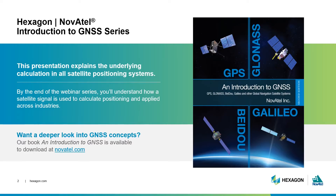This is the first of seven presentations designed to introduce you to GNSS Basics. This presentation will explain the underlying math that happens when using satellites to determine your position in the world. The webinar series will explore what happens to the signal as it leaves the satellite and goes through the atmosphere to your equipment and across industry. The series builds off our existing expertise — literally writing the book on GNSS. If you're ready to dig deeper, check out our Introduction to GNSS book at Novatel.com.